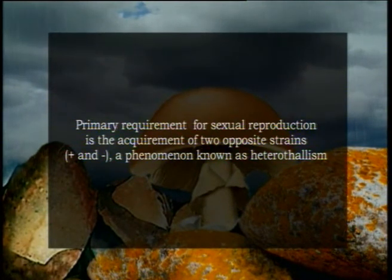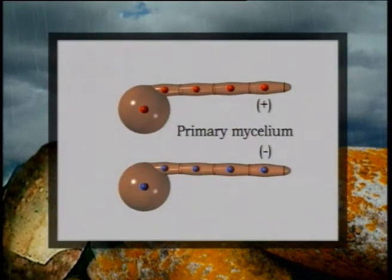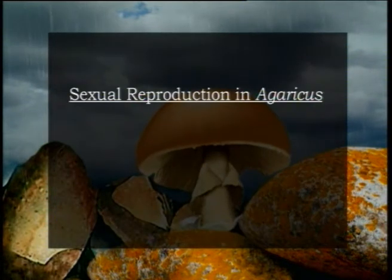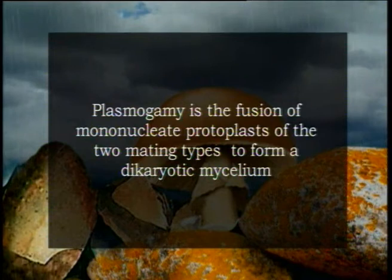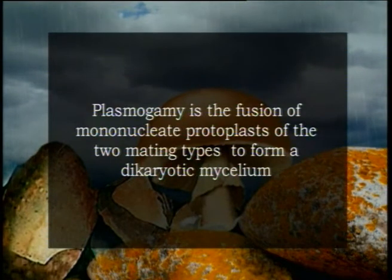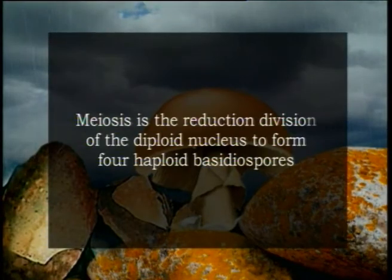For sexual reproduction, a primary requirement is the acquisition of two opposite strains, plus and minus, a phenomenon known as heterothallism. The somatic hyphae or primary mycelia of two different strains act as sex organs. Sexual reproduction in Agaricus occurs in three steps: plasmogamy, karyogamy, and meiosis. Plasmogamy is the fusion of mononucleate protoplasts of the two mating types, resulting in a dikaryotic secondary mycelium. Karyogamy is the fusion of two nuclei to form a diploid zygote. Meiosis is the reduction division of the diploid nucleus to form four haploid basidiospores.